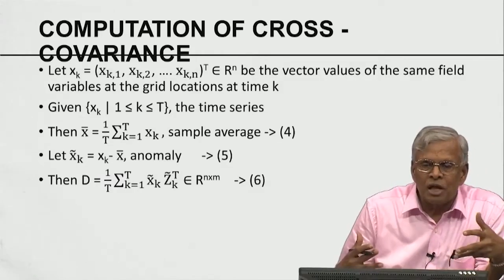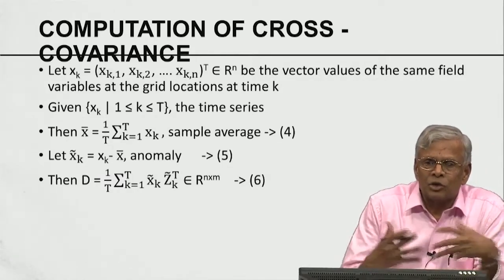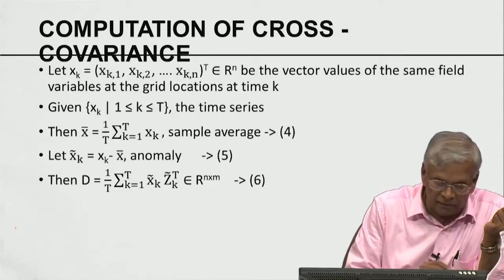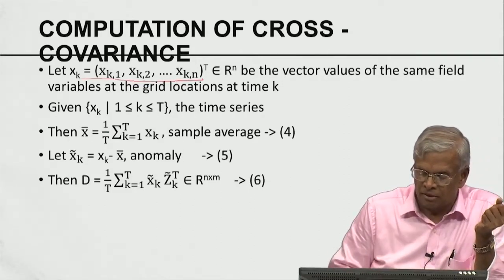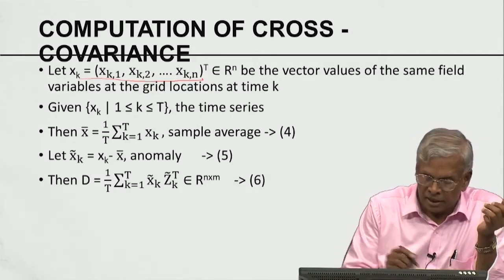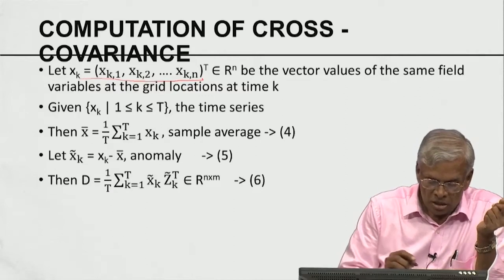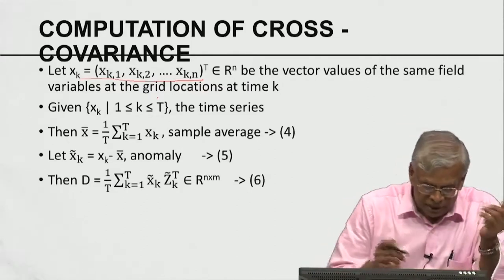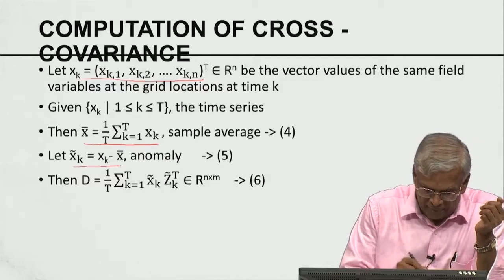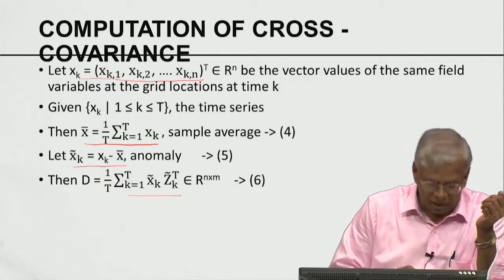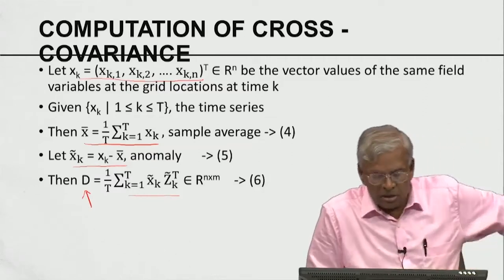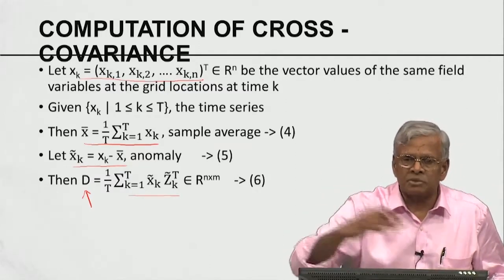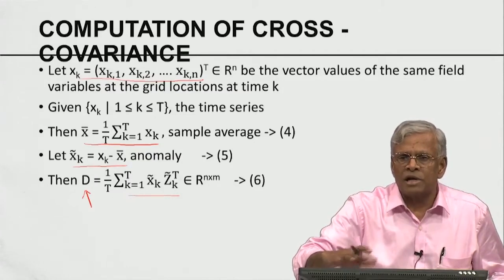Given a time series over 100 years, you crunch the values of matrix C and matrix D — a very routine calculation. Let x_k be the state variable vector of the same field variable at the grid locations at time k. If z has a time series, there is a corresponding time series for x. Once I have the time series, I compute the mean, the anomaly, and the cross-product which gives D.